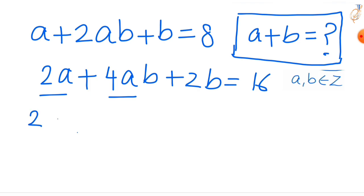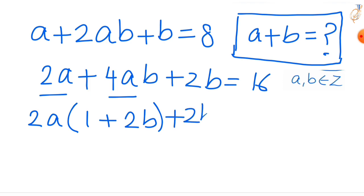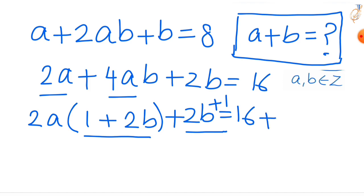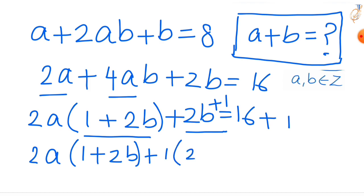Factor out 2a to get 2a(1 + 2b) + 2b = 16. Now, to form a factorable expression, add 1 to both sides, so that 2a(1 + 2b) + (2b + 1) equals 17. This lets us write (2a + 1)(2b + 1) = 17.